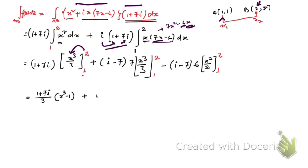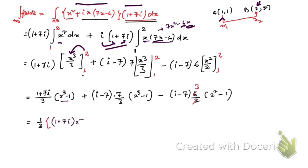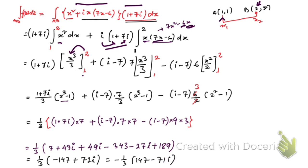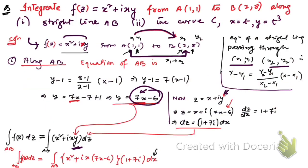After doing all the calculations, we obtain the answer for the integral along straight line AB. You can factor out a minus sign to write it in a simplified form. This completes part one. Now let us integrate the function along the curve C.